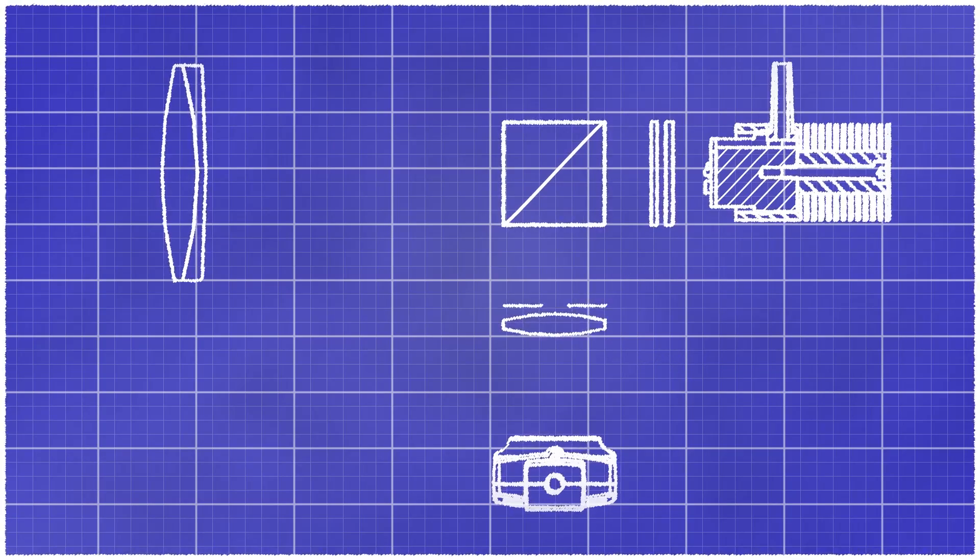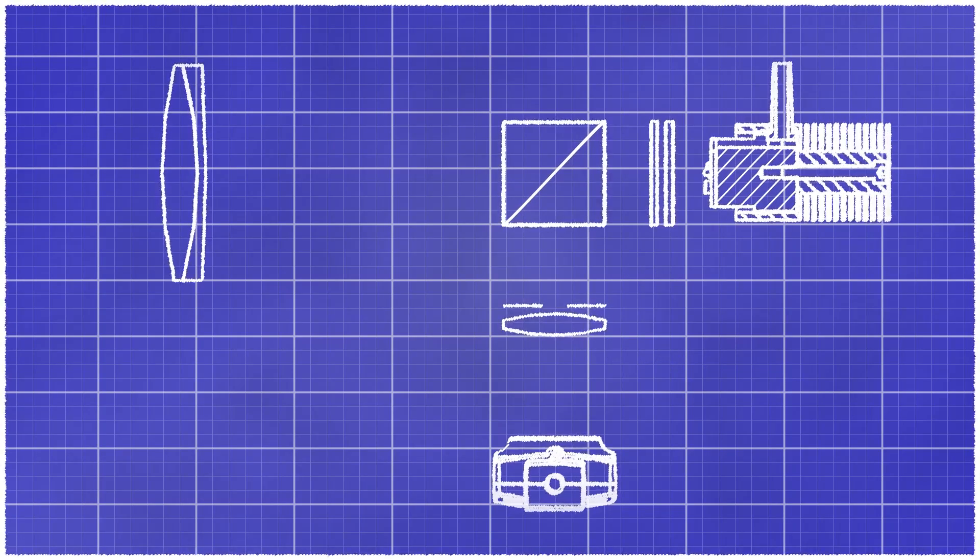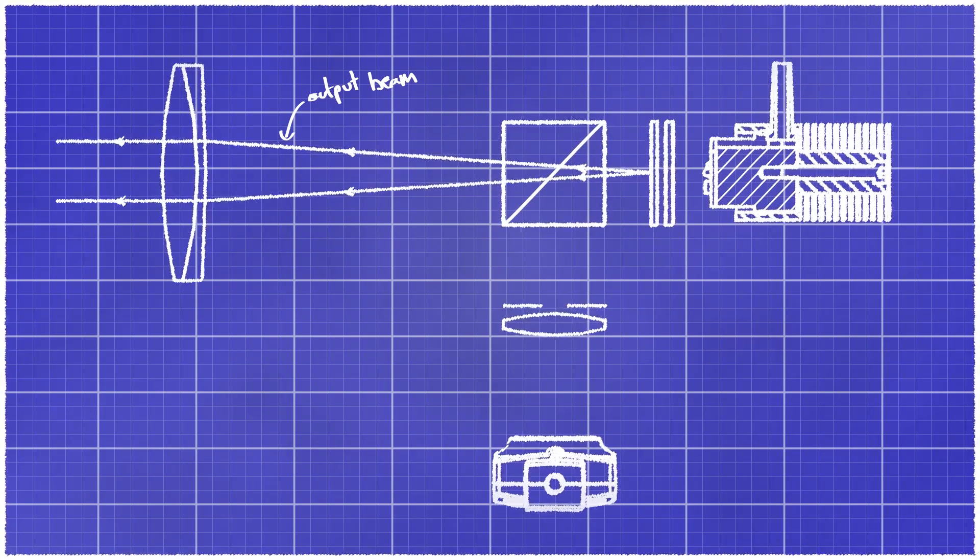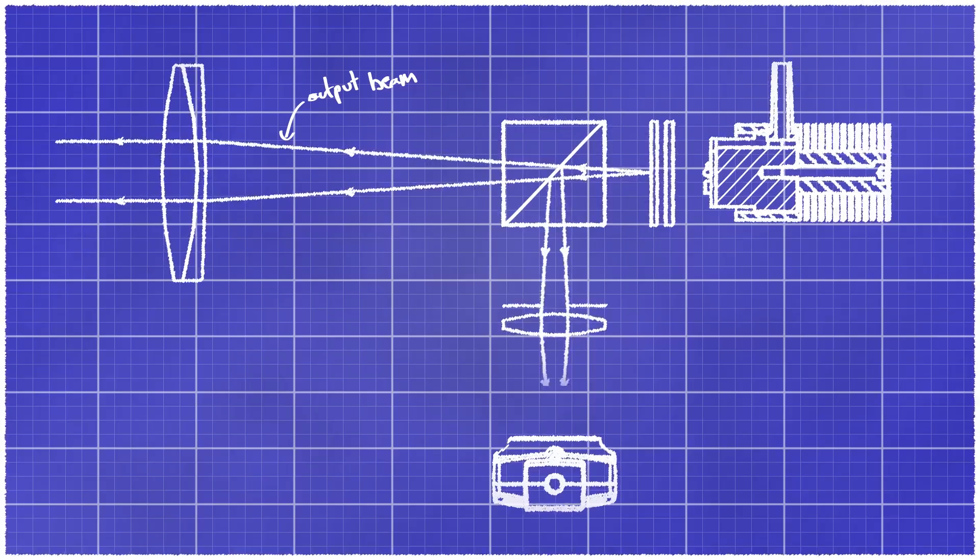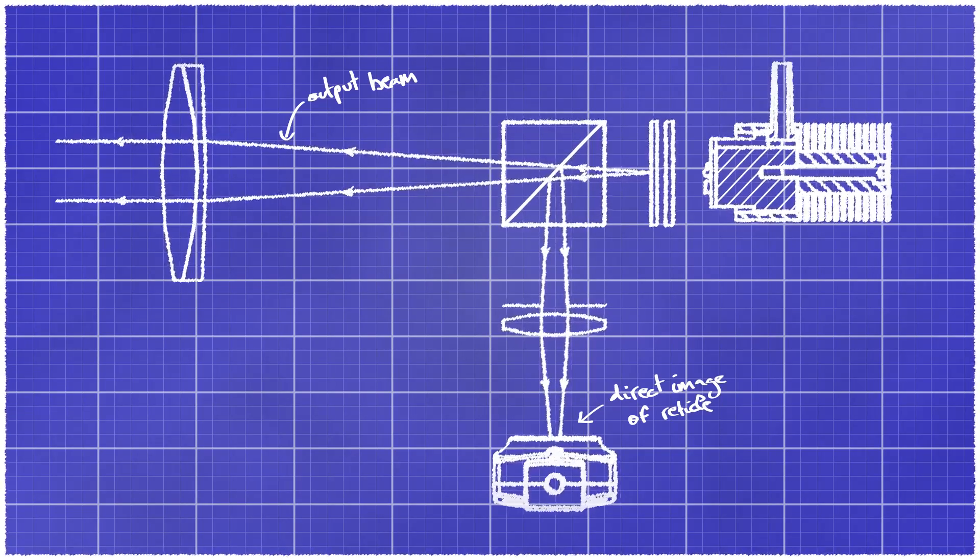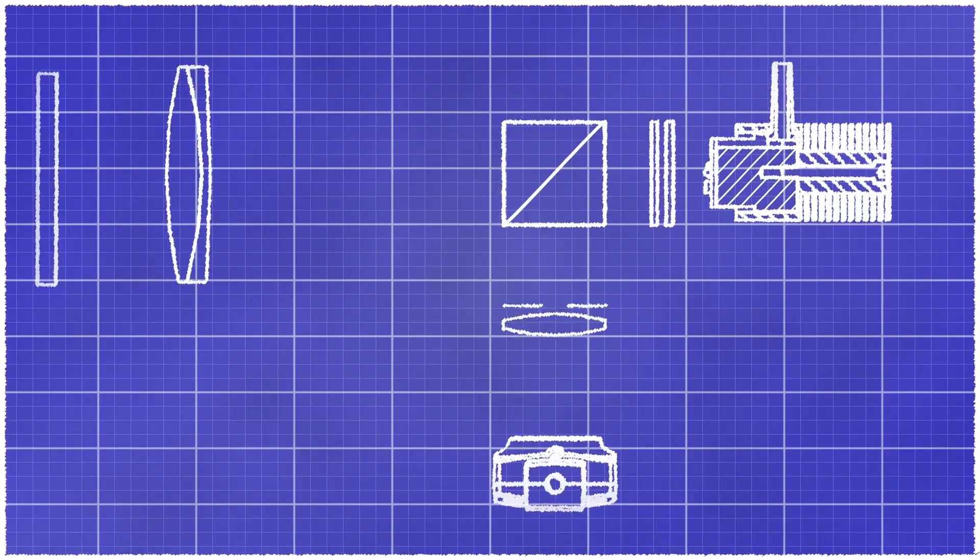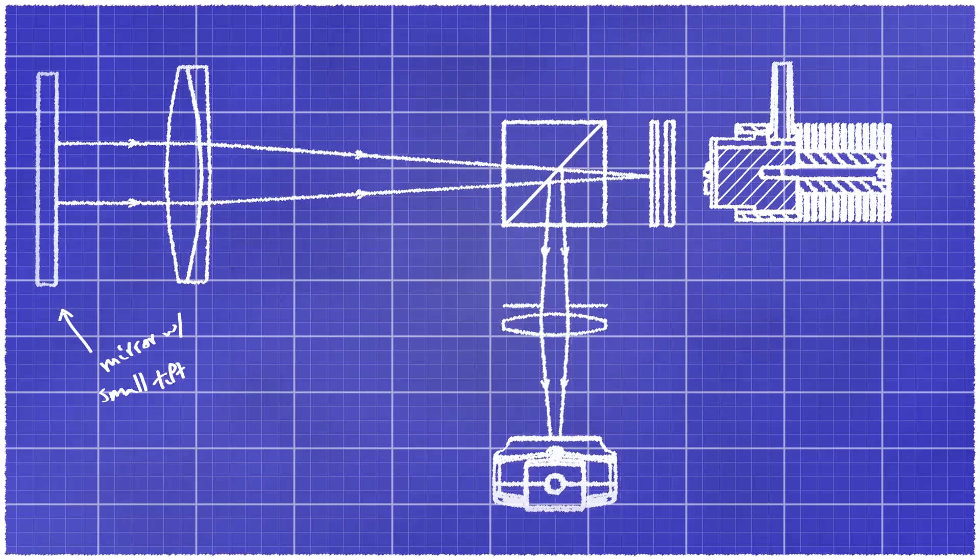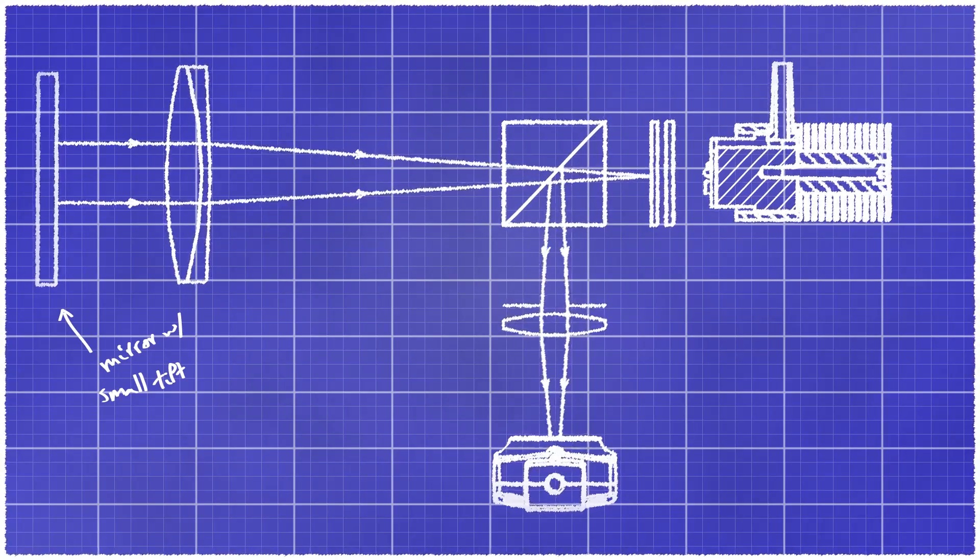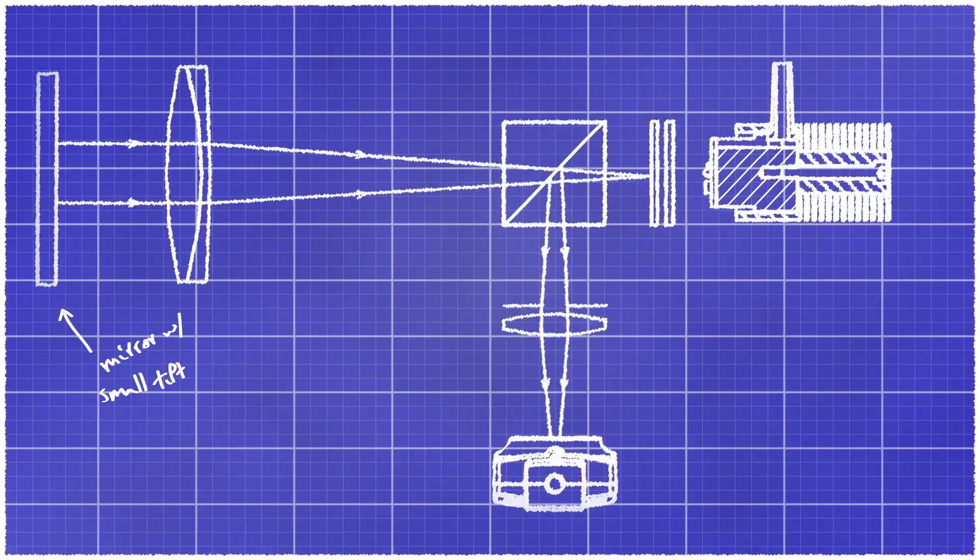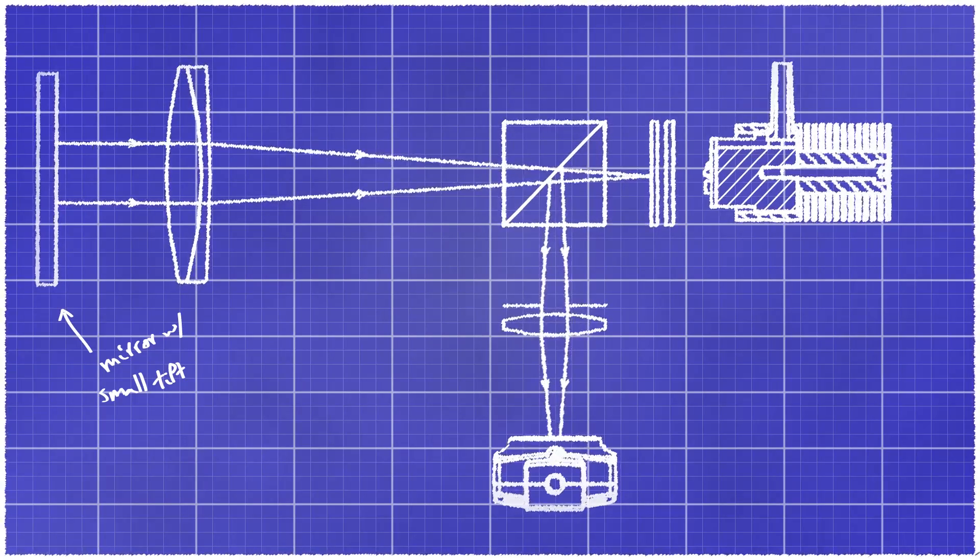Light will still exit the setup through the collimating lens, but half of it will also be reflected and pass through the bi-convex lens and reach the camera where we will have a direct image of the reticle target. If we now place a mirror in front of the auto-collimator with an extremely small tilt, the light will be reflected to the reticle target, and if the collimating lens is at the correct position, both the reticle target and its image will coincide on the same plane.